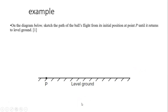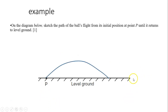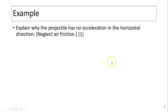Another example: on the diagram, sketch the path of the ball's flight from its initial position at point P until it returns to level ground. The path of a projectile is a parabola, so it looks like a parabolic arc.